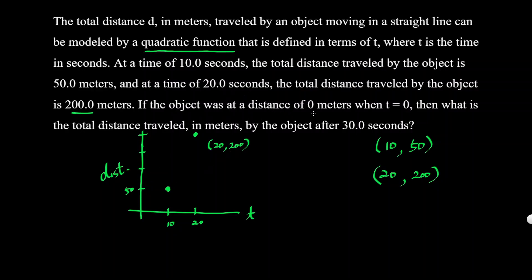At 0 seconds, the distance is obviously 0. So to graph that, we're gonna have a parabola. It's asking what will be the total distance at 30 seconds—what is our y value? We have a parabola because it's a quadratic function, and we have all three points. Let's figure it out.